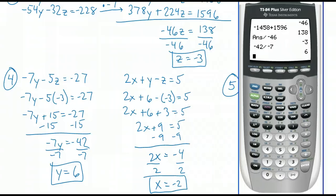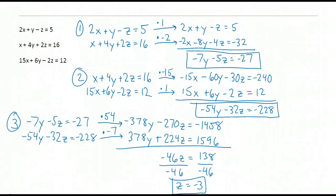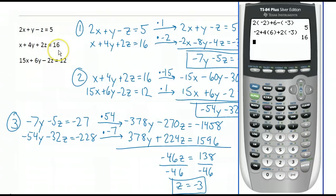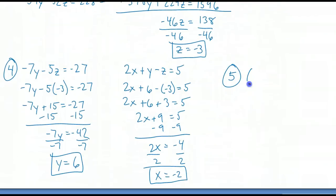I go back to my original three equations and plug in the values for x, y, and z. Checking the first equation: 2 times x plus y minus z — yes, I get negative 5. Checking the second equation: negative 2 plus 4 times y plus 2 times z — yes, it checks out. And in my third equation, plugging in x, y, and z — yes, it works out. So the ordered triple negative 2, 6, negative 3 is correct.